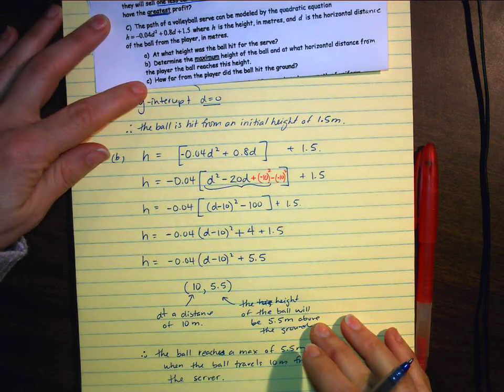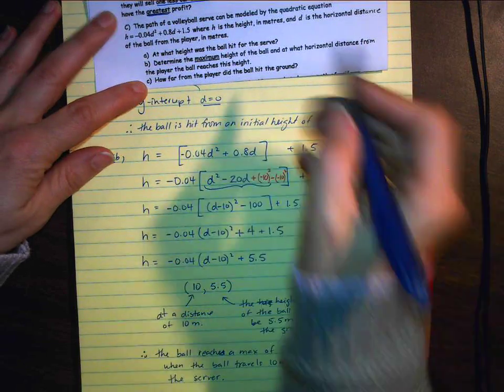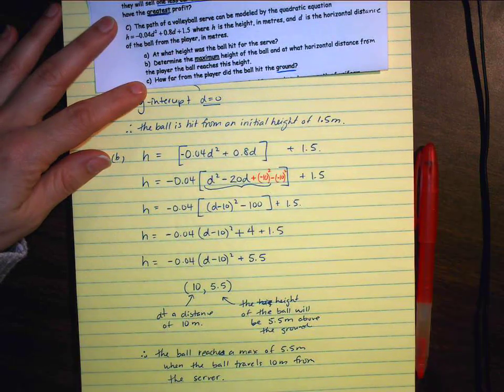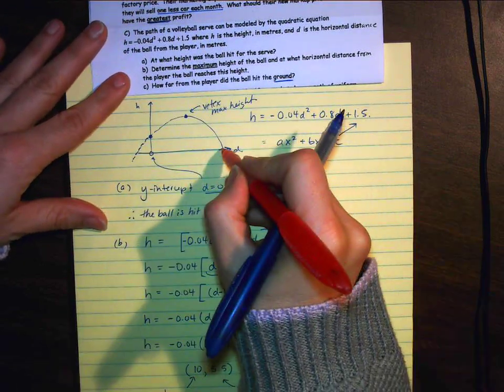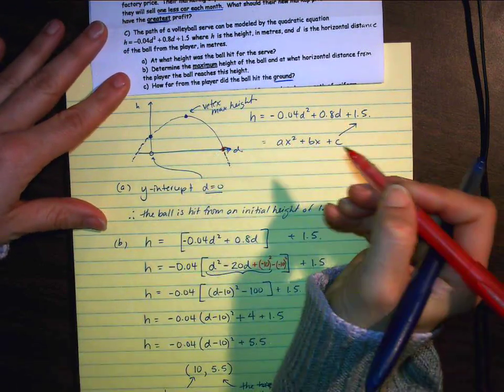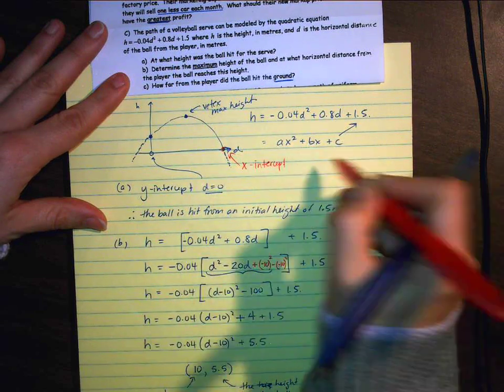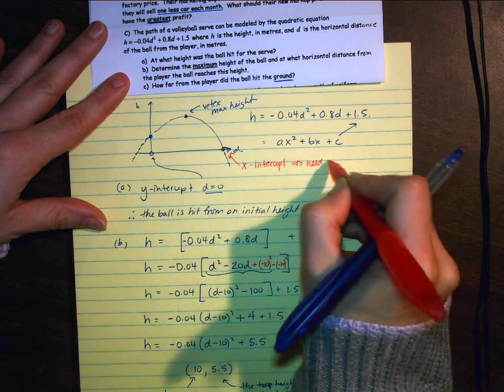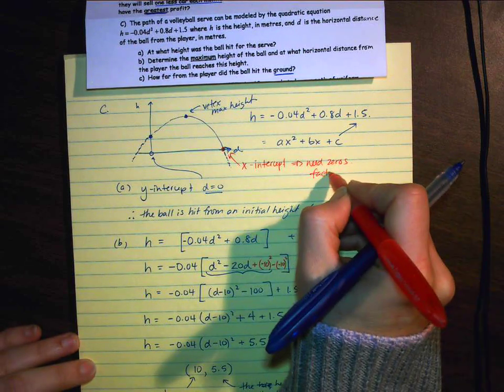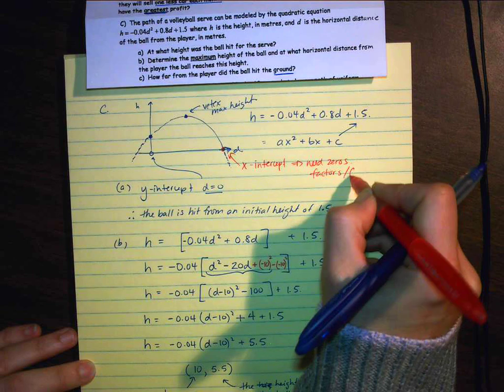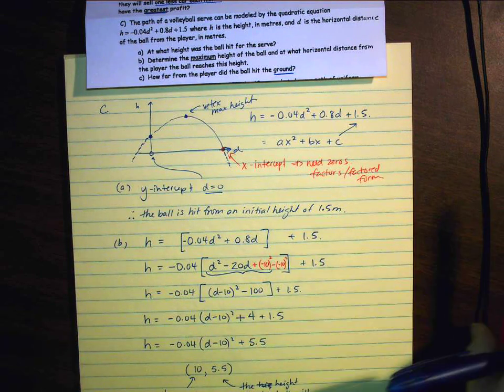And then it says, how far from the player did the ball hit the ground? Well, hitting the ground doesn't have to do with the vertex. That has to do with the ground. So let's go look at our sketch. If I'm looking at my sketch, where it hits the ground is going to be here. So here, that is an x-intercept. So that means I need the zeros. And that means I need to look at the factors, or the factored form.